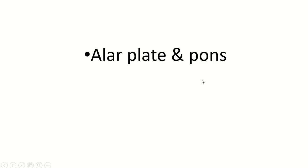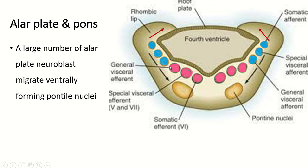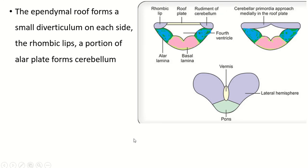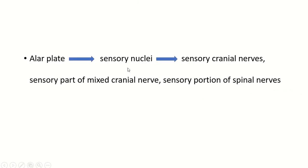Regarding the alar plate and pons: some nuclei leave the alar plate and come ventrally to form the pontine nuclei. Some neuroblasts leave the alar plate and go toward the rhombic lip, which further develops and forms the cerebellum. The alar plate also gives rise to sensory nuclei, sensory cranial nerve nuclei, the sensory part of mixed cranial nerves, and the sensory portion of spinal nerves.